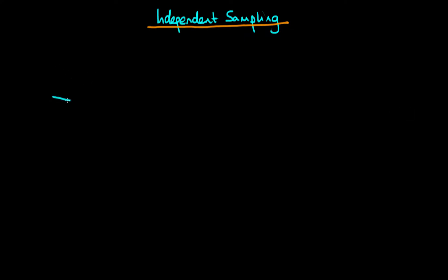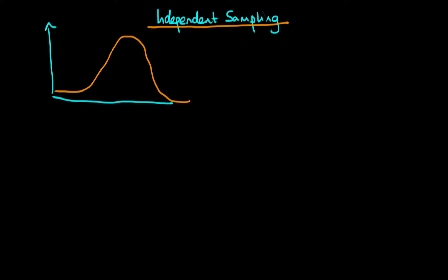Suppose that we have some probability distribution that we'd like to sample from. Let's imagine we have a distribution which looks something like this. The vertical axis here is the value of the probability density, and the horizontal axis here is some continuous parameter, say theta.